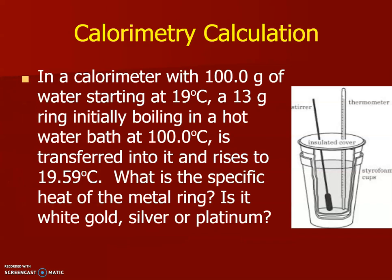Here is a sample calorimetry calculation. In a calorimeter with 100 grams of water starting at 19°C, a 13 gram ring initially boiling in a hot water bath at 100°C is transferred into it and rises to 19.59°C. What is the specific heat of the metal ring? Is it white gold, silver, or platinum?